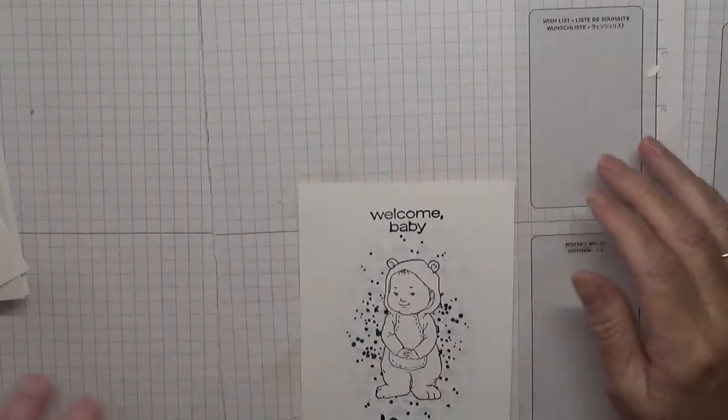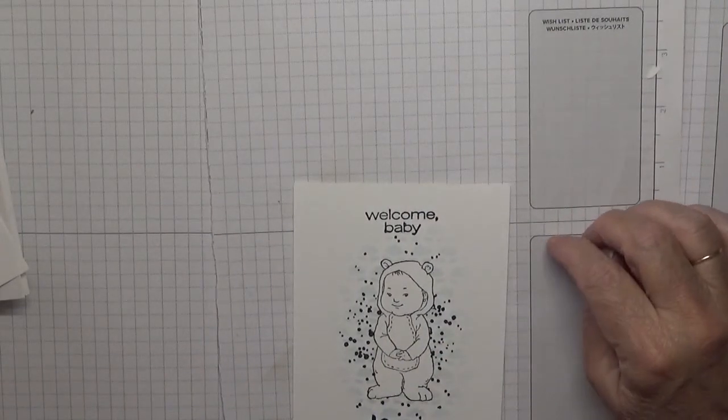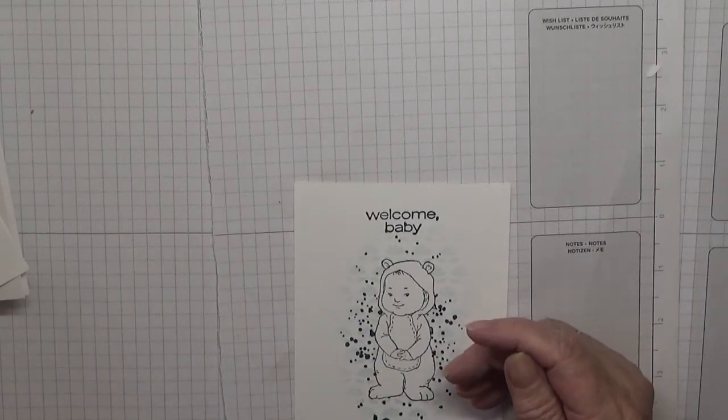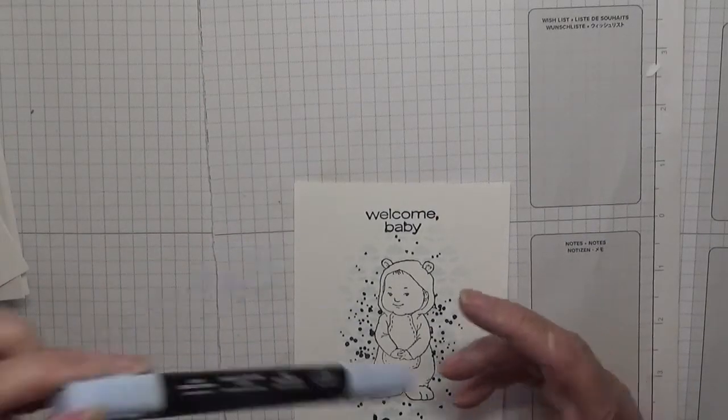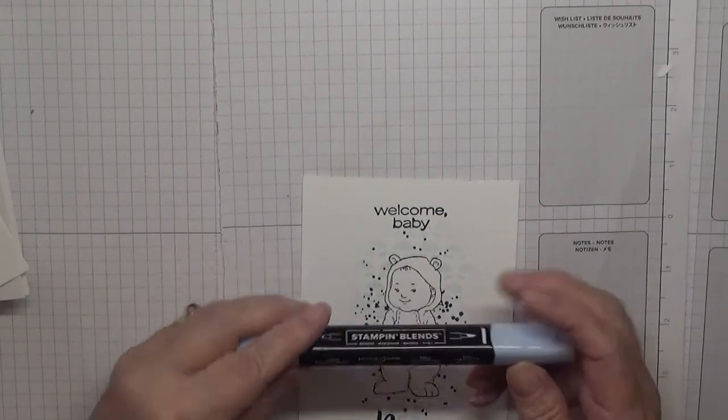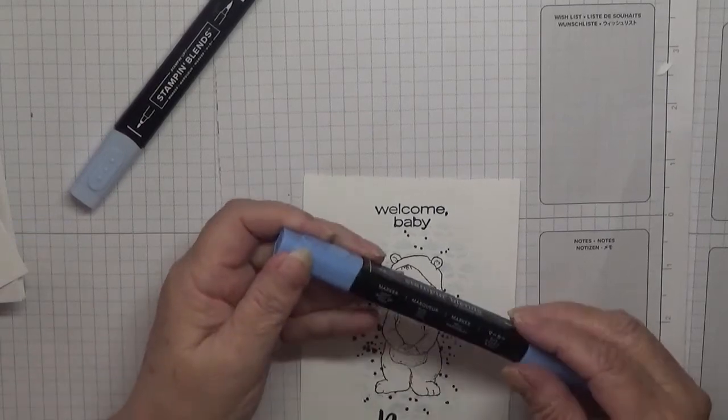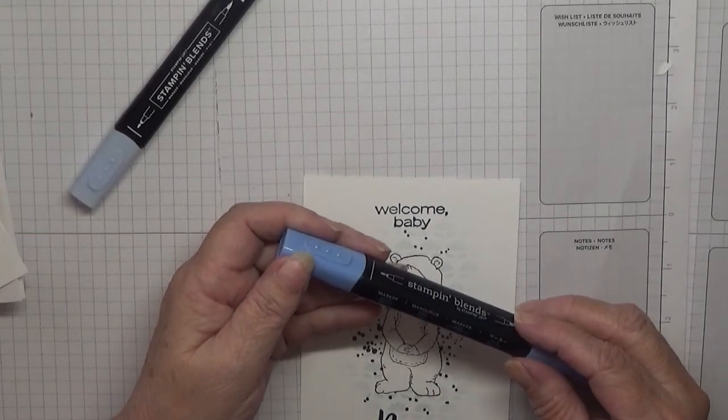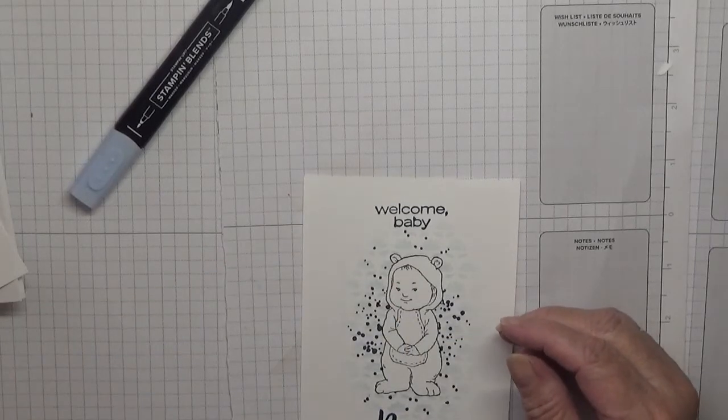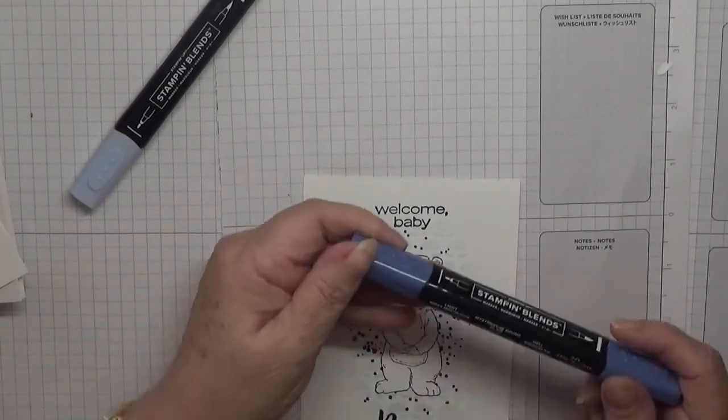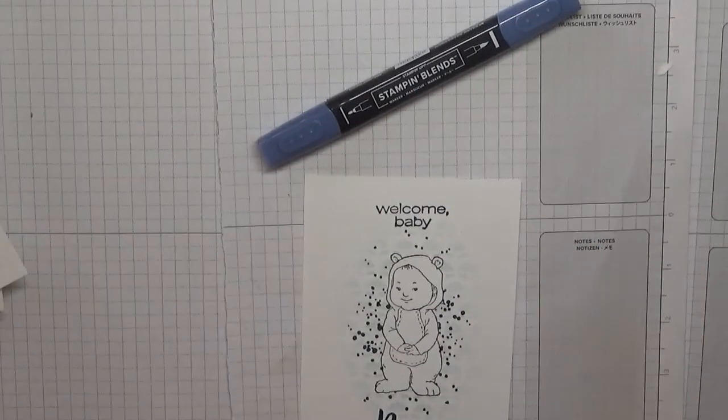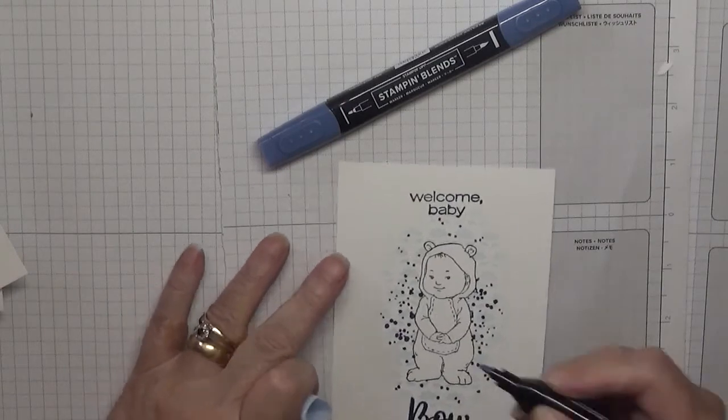All we've got to do now is color this in. So we're going to color it in light Soft Sea... why do I keep saying Soft? Seaside Spray, and light Misty Moonlight. Yeah, so we're going to color just his bib in.